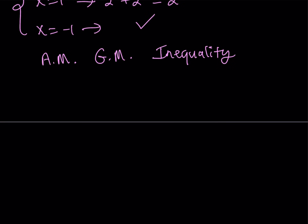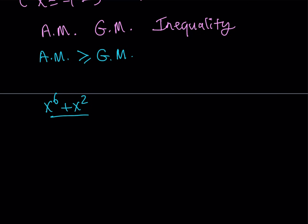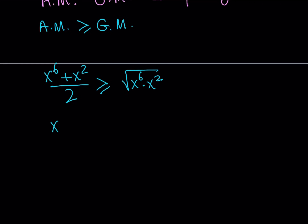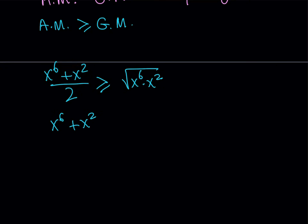Let's start with x to the sixth and x squared, because that's going to be important in my setup. We can safely say that the arithmetic mean of two numbers is greater than or equal to their geometric mean. Using this with x to the sixth and x squared: we add them and divide by two, or multiply and take the square root. So x to the sixth plus x squared, divided by two, is greater than or equal to the square root of x to the eighth, which equals x to the fourth.